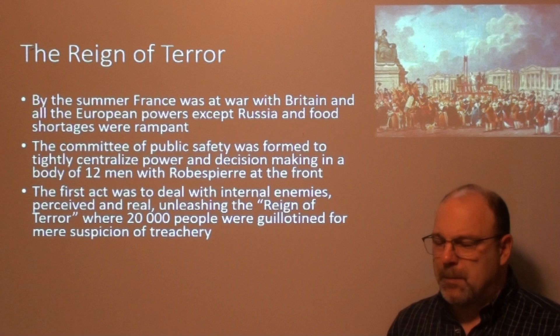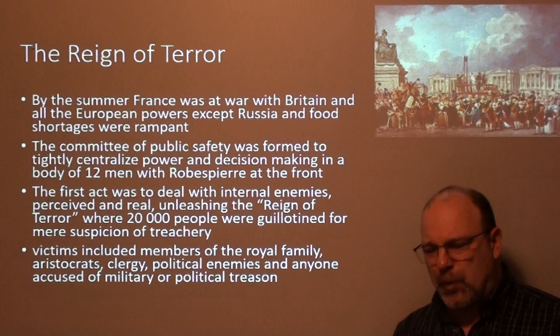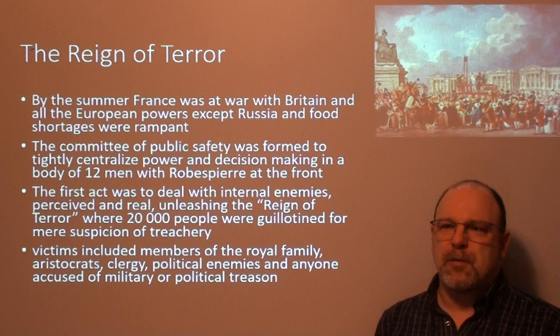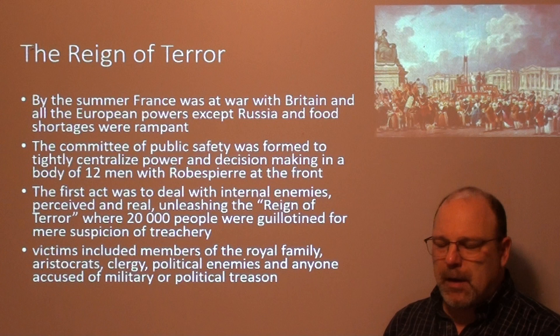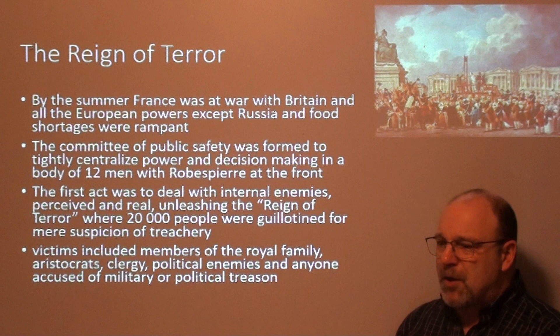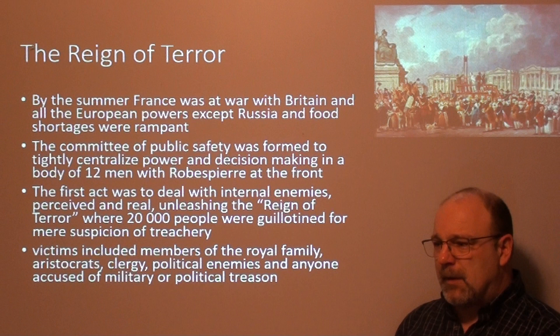Victims included members of the royal family, aristocrats, clergy, political enemies, and anyone accused of military or political treason. Accused is the key word — that's all it took. A lot of people put on the guillotine were simply unfavorable in their communities — seen as greedy, ill-mannered, or disliked. If you were compassionate and showed goodwill toward others you might be spared, but if you had a reputation as a malcontent and abusive individual, chances were pretty good you'd find yourself on the chopping block.